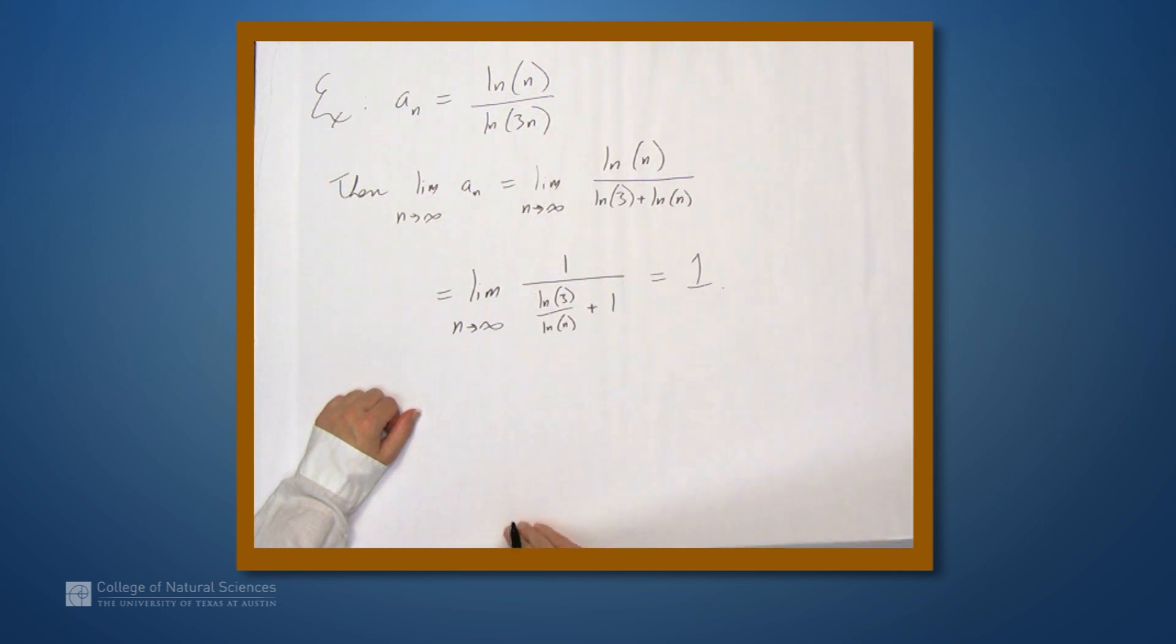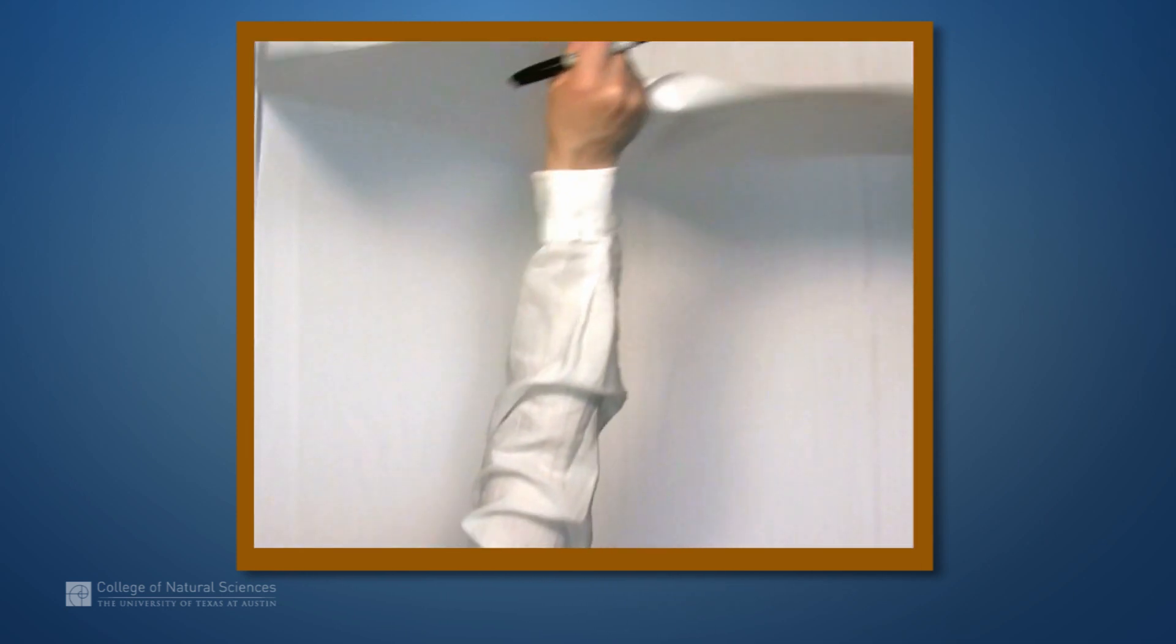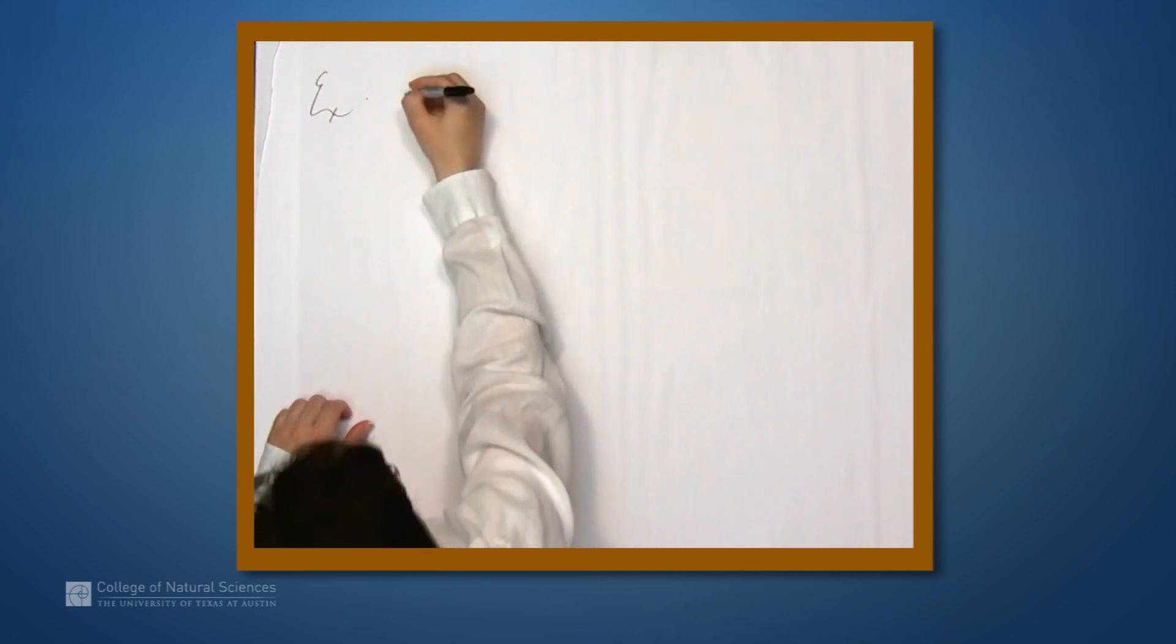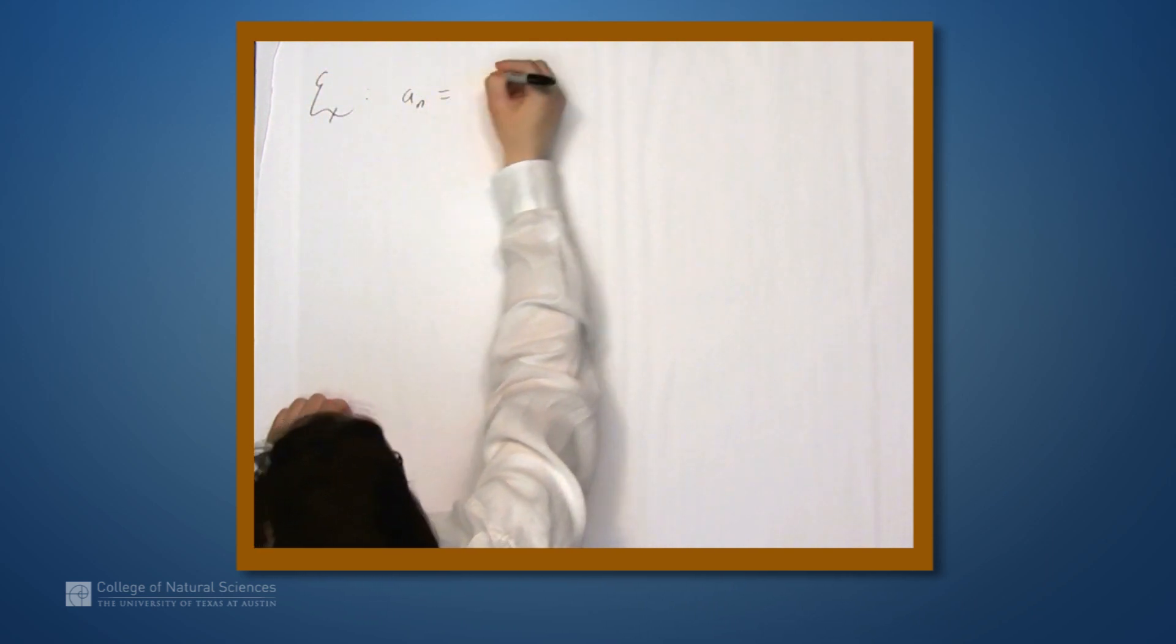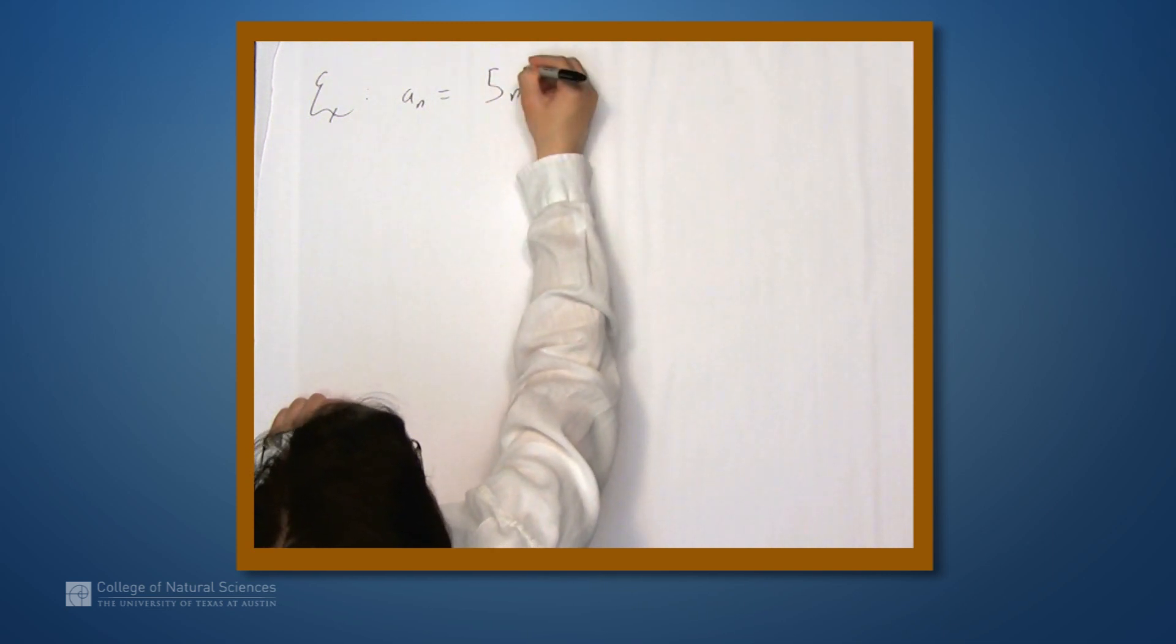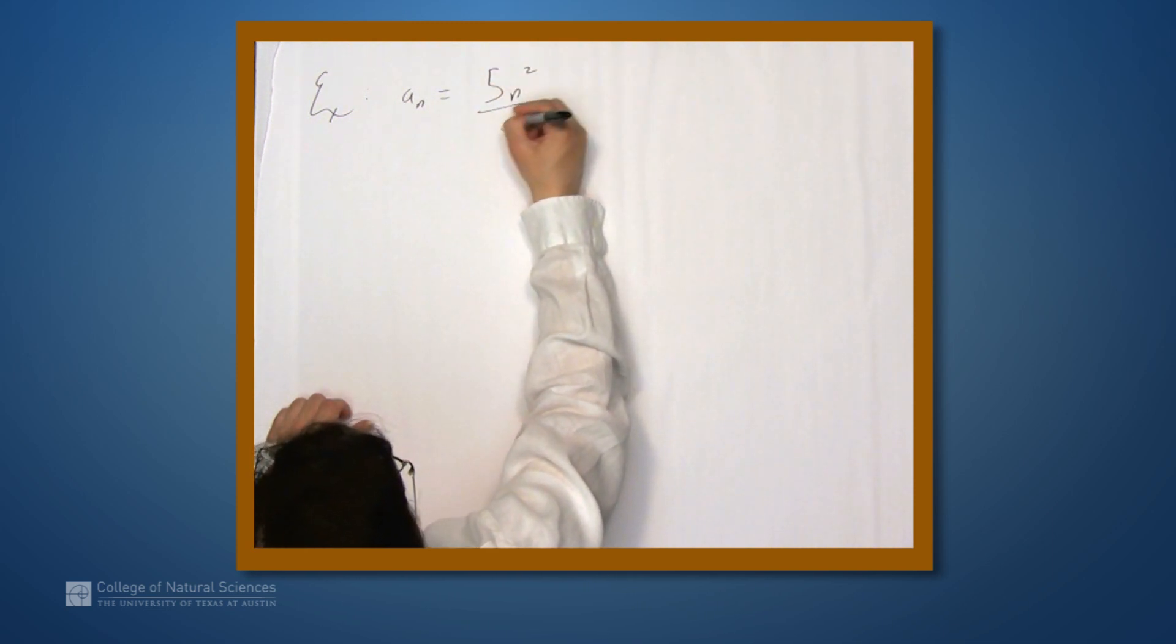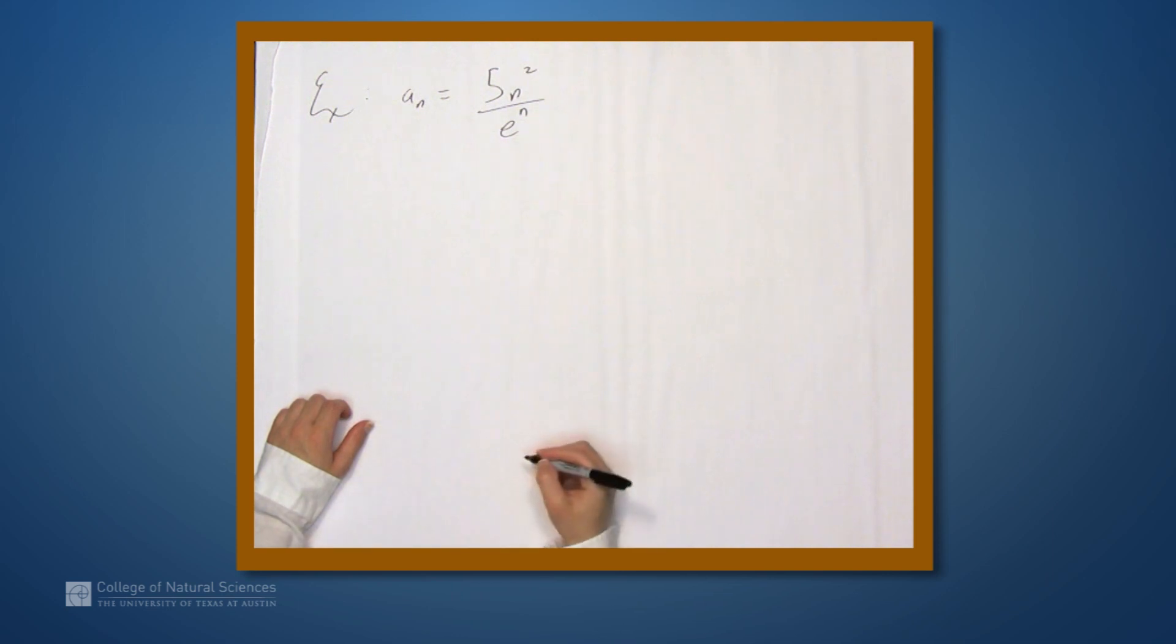Now let's look at a slightly more complicated example. So here let's let a sub n be 5n squared over e to the n.